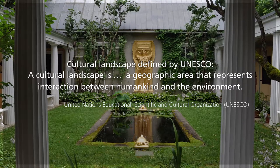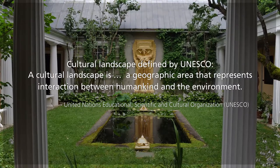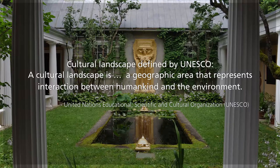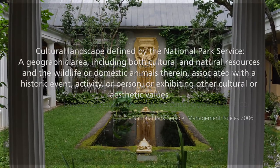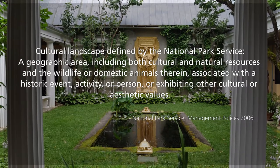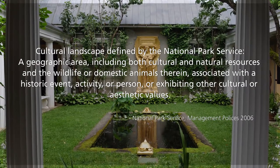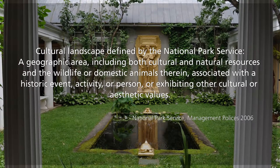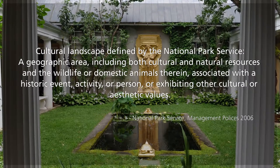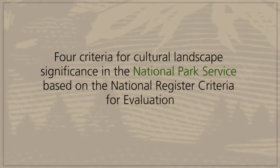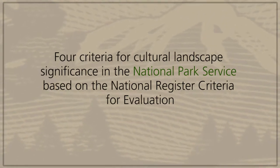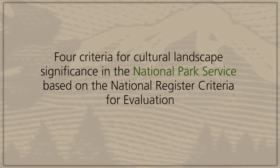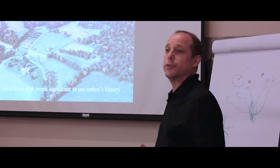A cultural landscape is defined by the United Nations as a geographic area that represents interaction between humankind and the environment — a pretty basic description of those landscapes where there is some human involvement. In the National Park Service, we look at four different criteria or reasons why we determine cultural landscapes as having significance or importance.